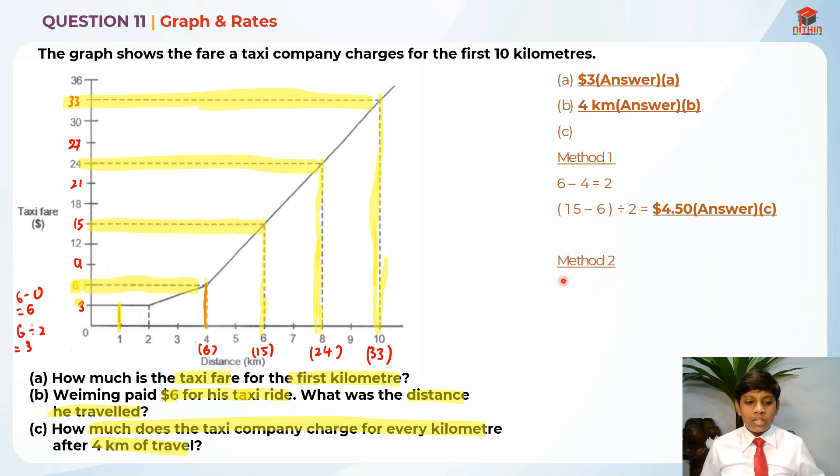The second way is to take 8 and 6. So 8 minus 6 is 2. After that, take 24 minus 15, divide by 2, which is $4.50. For method 3, take 10 minus 8, which is 2. Then take 33 minus 24, divide by 2, and it will still give me $4.50.